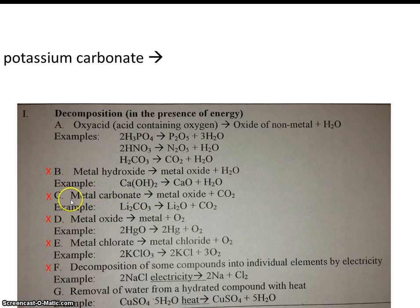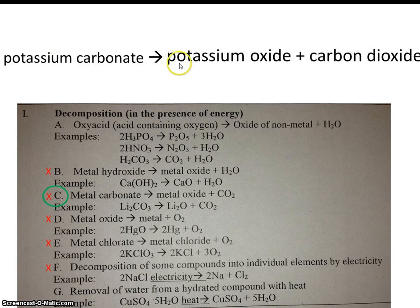So according to our example, a metal carbonate, when it decomposes, will decompose into a metal oxide and carbon dioxide. So we know we're going to be making a metal oxide here. What metal oxide do you think we might make? That's right. We'll be making potassium oxide, of course. So potassium oxide and carbon dioxide. Those will be our products.